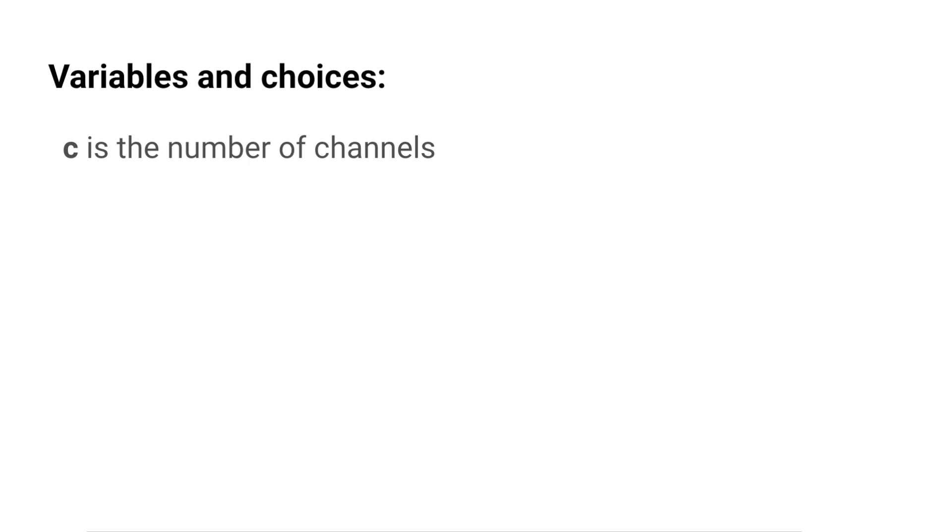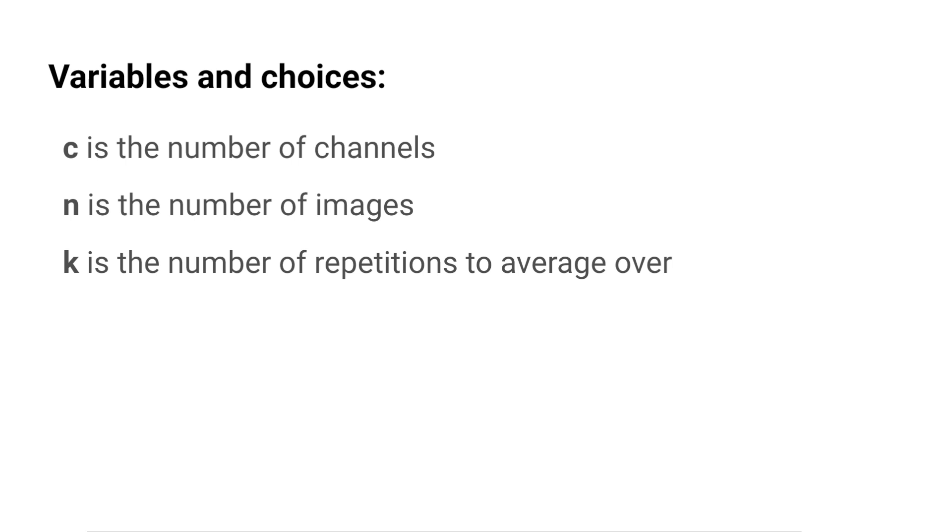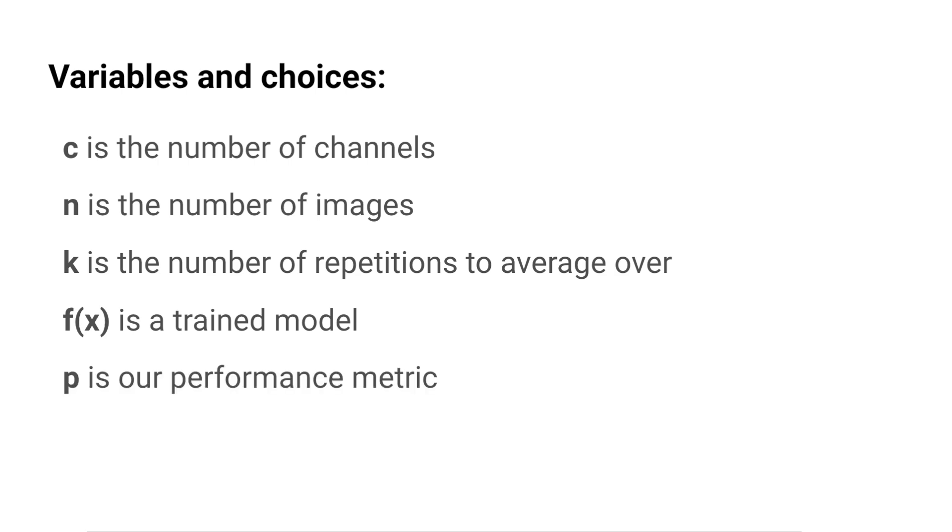Before we get into the applications of PCI it's worth discussing the algorithm more formally. To calculate PCI scores we start with some initial values: C is the number of channels, N is the number of images, K is the number of repetitions to average over, F of X is a trained model, and P is our performance metric. For RGB images C will be 3, while for remote sensing problems C can be much larger. N is usually the size of the validation or testing dataset. We need K because the permutation process is random — repeating the calculation gives us a more stable estimate of PCI scores.